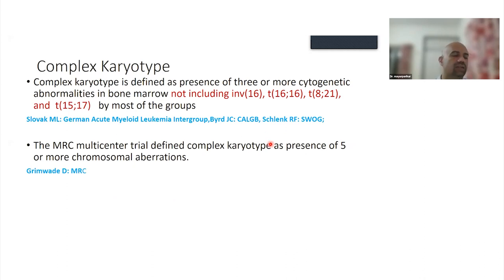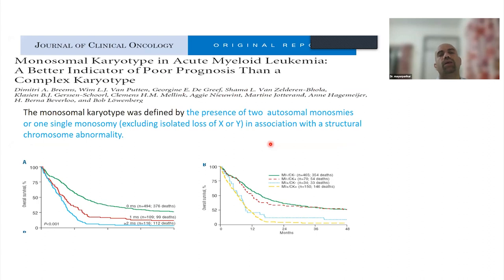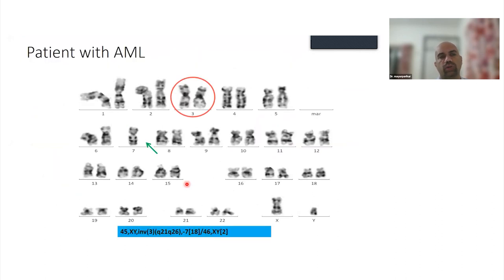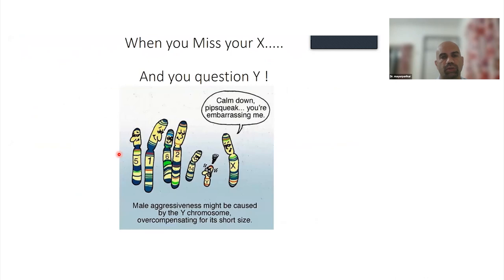Complex karyotype is defined as that which has three or more abnormalities. A monosomal karyotype is defined by presence of two autosomal monosomy or one single autosomal monosomy with a structural abnormality. This was a patient of MDS with deletion of 1q on FISH, was on treatment. But when we did a karyotype, it showed a complex karyotype, and this patient soon evolved into an acute leukemia. Here there's an abnormality of 3q with monosomy 7, and this is again a monosomal karyotype.